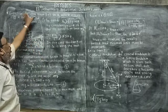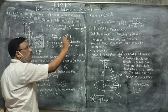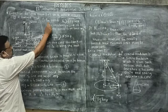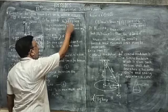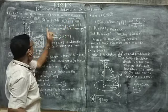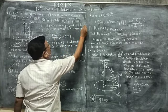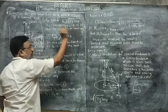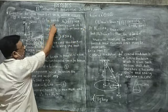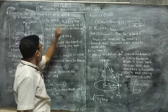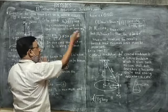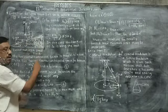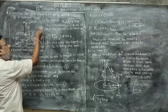Let v2 denote the upper speed limit. We are going to derive the expression for it. For speed v2 greater than √(rg·tanθ), the component N·sinθ is less than the centrifugal force, that is mv²/r. When N·sinθ is less than the centrifugal force, it means there is a chance to throw the vehicle beyond the outer edge of the road.